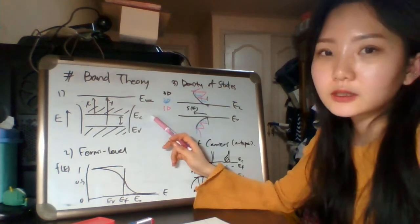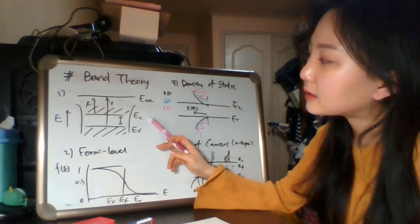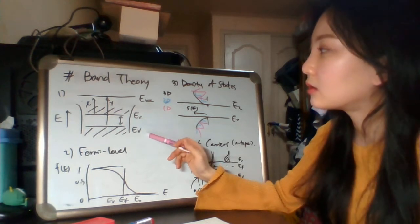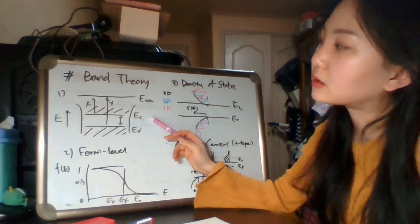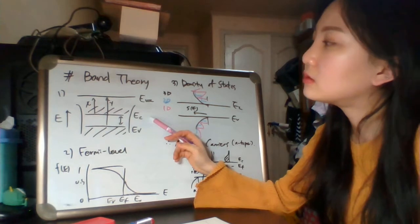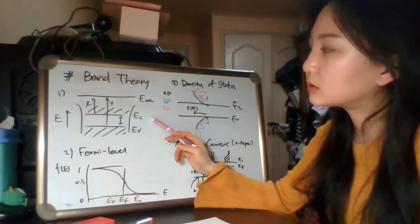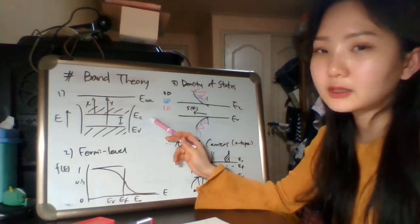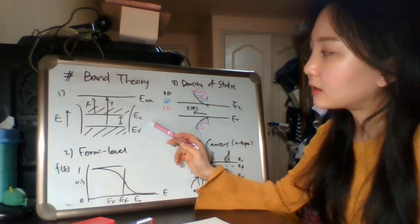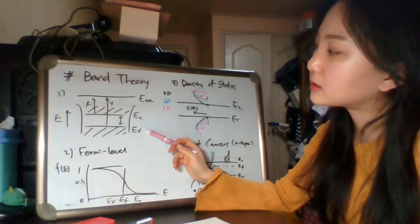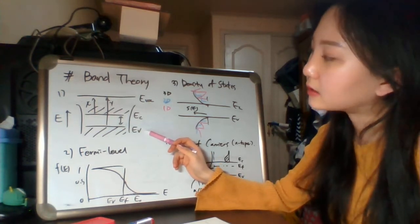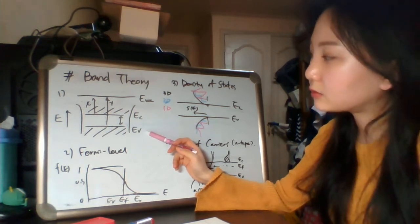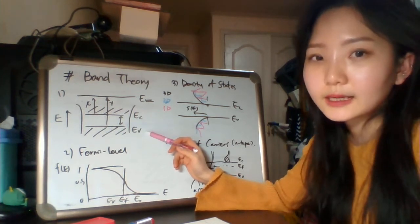This is the definition of conduction band and valence band. Conduction band is the lowest energy level with electrons completely empty at zero Kelvin. Valence band is the highest energy level with electrons fully occupied at zero Kelvin.